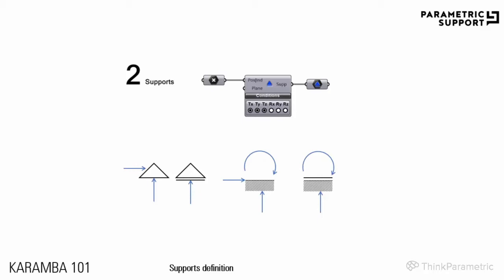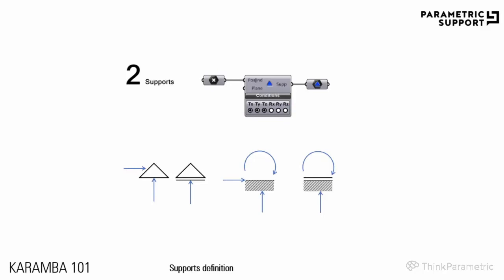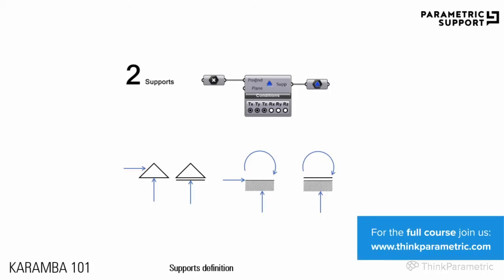You need to define the degrees of freedom in the submenu called conditions. If a button is activated — shown in black — it means there is either zero translation or zero rotation on the specific axis. So if the circle is black under T (translation) or R (rotation), the movement is blocked. Black means blocked, and white means open. As a result, we have a fully defined support that is used as input to the assemble component.